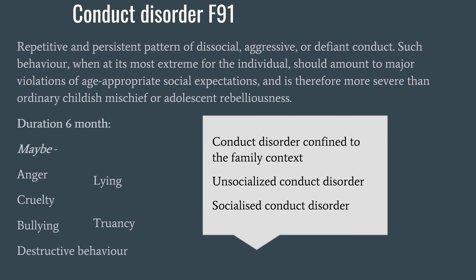According to ICD classification, conduct disorder is classified as F91. It is a repetitive and persistent pattern of dissocial, aggressive, or defiant conduct. Such behavior, when it is at its most extreme for the individual, should amount to major violations of age-appropriate social expectations and is therefore more severe than ordinary childish mischief or adolescent rebelliousness — for example, temper tantrums at age three cannot be included. Duration here is six months, while in DSM it is one year. The patient can show symptoms of anger, cruelty, bullying, lying, truancy, and destructive behavior. ICD classifies it as conduct disorder confined to the family context, unsocialized conduct disorder, and socialized conduct disorder. In socialized conduct disorder, they have peer groups with whom they have proper interaction, whereas in unsocialized conduct disorder, that does not happen.